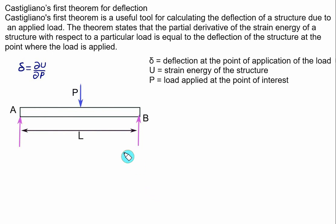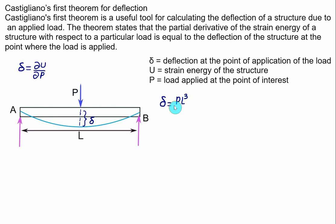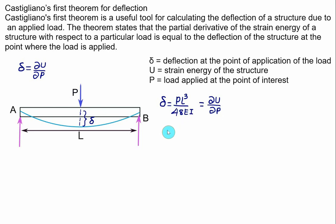For a simply supported beam with load P acting at the center, the maximum deflection is δ = PL³ divided by 48EI. Using Castigliano's theorem, ∂U/∂P = PL³/48EI. Integrating with respect to P: L³/48EI is constant, and the integral of P dP is P²/2, giving 2×48 = 96. Therefore, the strain energy stored is U = P²L³ divided by 96EI.